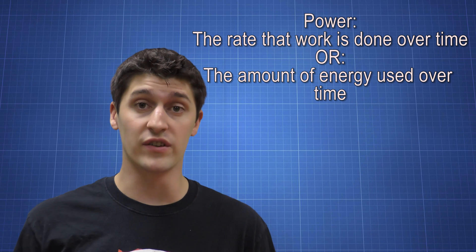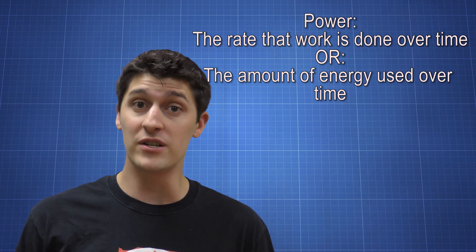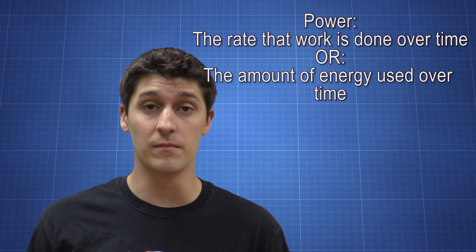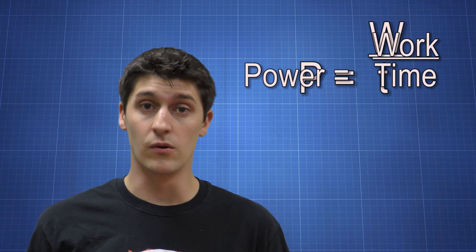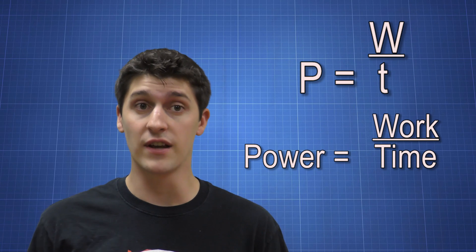Power is the rate that work is done over time, or it's how much energy is used up in the system. Our equation for power is P equals W over T, or power is equal to work over time, which makes sense since it's the rate that our work is being done.